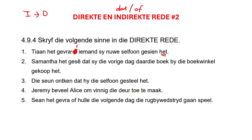We take it out and we open our quotes. Then immediately after our quote, we had either our verb or a pronoun. We're going to take the verb and put it right to the front again. So: Tian het gevra, het iemand — and we have to change it back to 'my'. Tian het gevra: het iemand my nie we self won gesien? And obviously, question mark, and we close. Easy peasy, right?